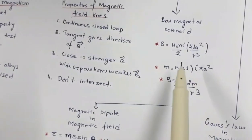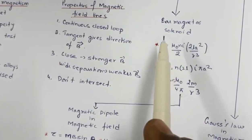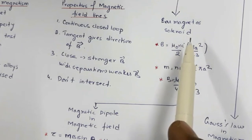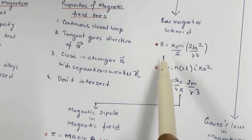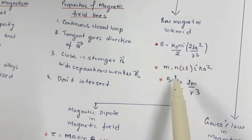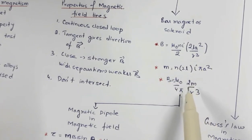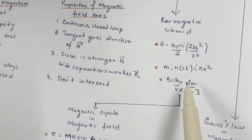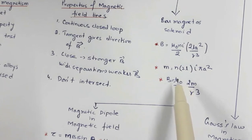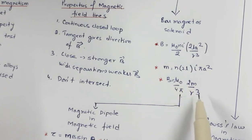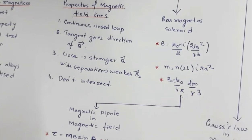Then you have the bar magnet as a solenoid — the expression for the magnetic field along the axis and the expression for magnetic dipole moment, which reduces to the same form as the magnetic field along the axis of a magnetic dipole.